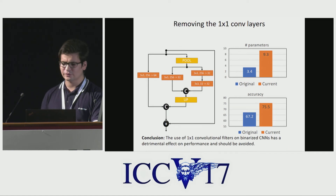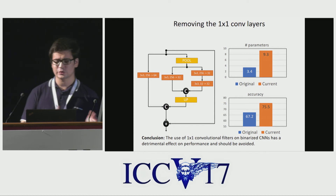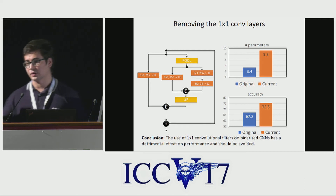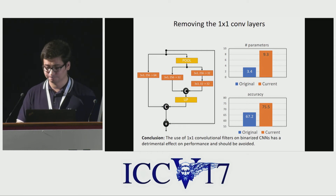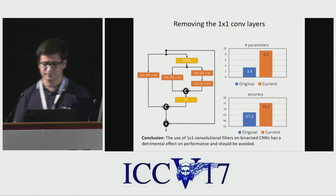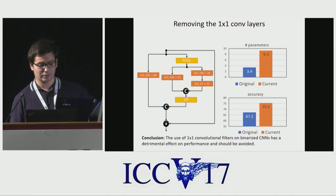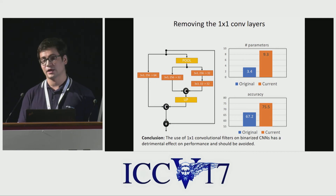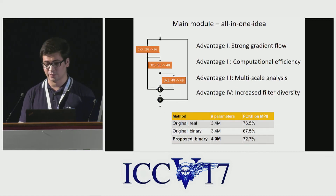The next thing we tried is to remove the one-by-one convolutional layers. Our motivation to remove them is the following: in the binary case, filters are limited to two states only and therefore have very limited learning power. In practice, this may actually block the propagation of good features. As our results show, just by removing them we can observe a large performance improvement. Therefore, one-by-one convolutional layers should be avoided in the binary case.